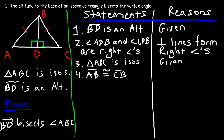I'll conserve space and just write 'definition of an isosceles triangle' to keep things simple, but if your teacher wants a full sentence, just say that the two sides of an isosceles triangle are congruent, and that should work.